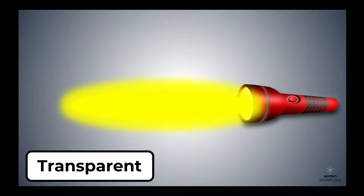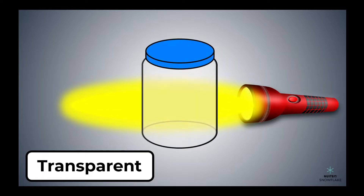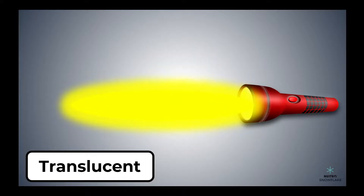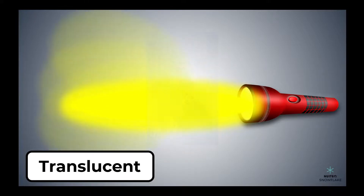Now, let's imagine that we have a beam of light traveling in a straight line. If we place a transparent material in its path, the light will pass through the material and continue in the same direction. If we place a translucent material in its path, the light will pass through the material, but it will be scattered in different directions.